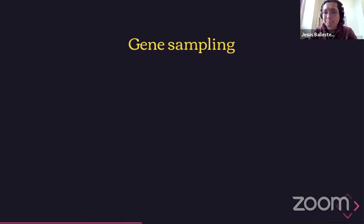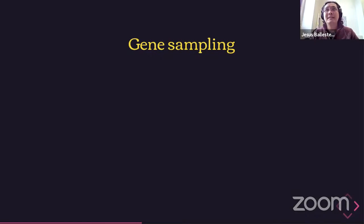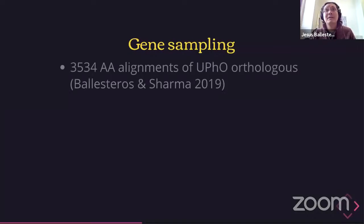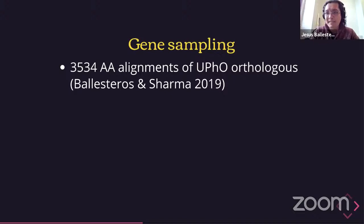In terms of gene sampling, we followed a different strategy from the 2019 paper, where the largest dataset analyzed was more than 10,000 genes. We now know we need to move in a different direction by sampling more taxa. Because orthology assessment in a dataset of this scale is simply unfeasible with any method, we resorted to using the same orthologs previously identified in the 2019 study — 3,500 different orthologous genes.